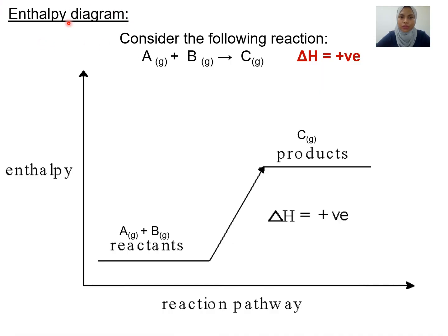This is the enthalpy diagram for an endothermic reaction. You know it is endothermic because the enthalpy change is positive. For a reaction where A + B are reactants and C is the product, the total enthalpy level for the product must be higher than the reactant. Label the reactants and products accordingly. The arrow goes upward, indicating a positive enthalpy change. In an enthalpy diagram, you do not need to draw the activation energy — the y-axis is enthalpy, not potential energy.